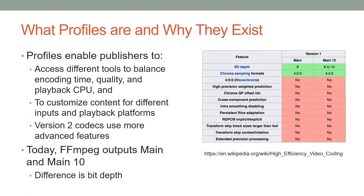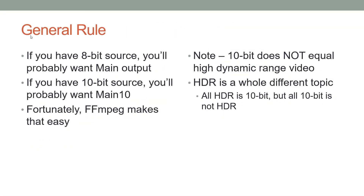Profiles are an option you'll have to set regardless of which HEVC codec you apply. Profiles enable publishers to access different encoding tools to balance encoding time, quality, and playback CPU load. There are two profiles available today: main and main10. The difference is bit depth — main is 8-bit, main10 is 8-to-10-bit. Main targets 8-bit content and displays; main10 targets 10-bit content and HDR displays. Generally, 8-bit source means main output, and 10-bit source means main10.